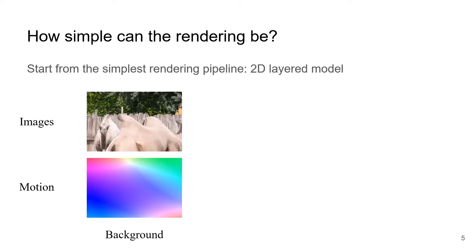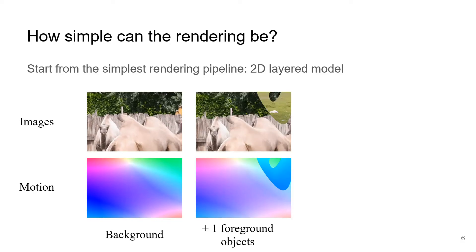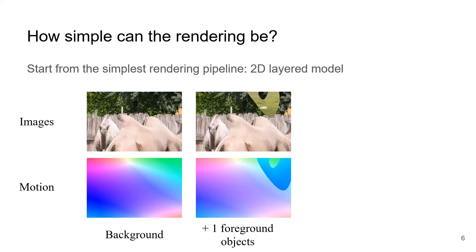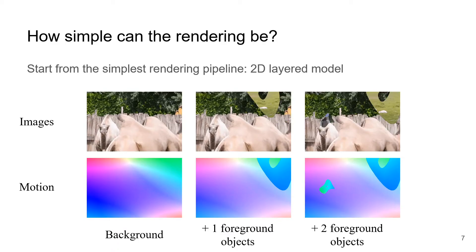Another question we consider is how simple can the rendering be? To answer this question, we start from a very simple 2D rendering pipeline, which uses a layered approach. We first sample a natural image as the background, then sample an optical flow and forward warp the background image. We then sample another image, its motion, and shape, and composite with the background. We can repeat the process to add more foreground objects.